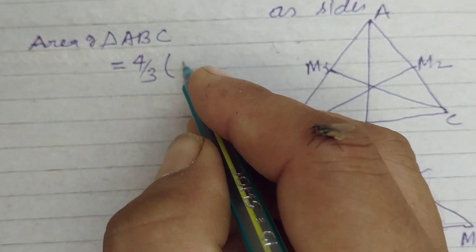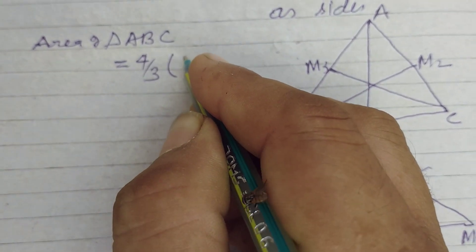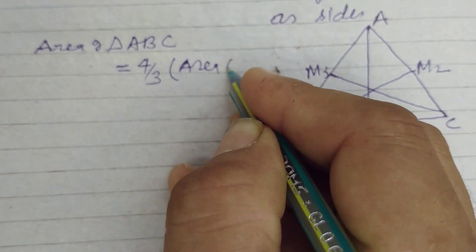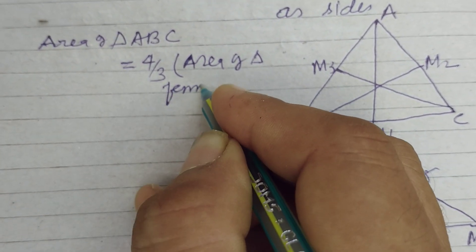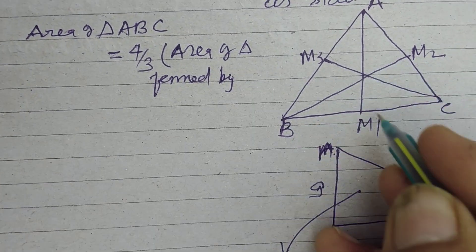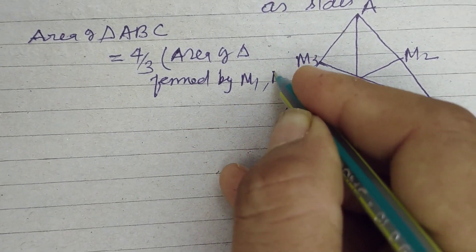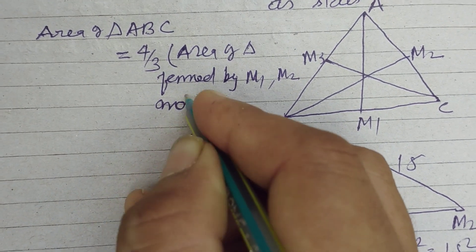So area of triangle ABC, 4 by 3, area of triangle formed by, I say, median M1, M2 and M3.